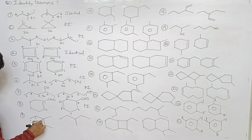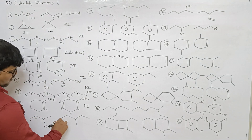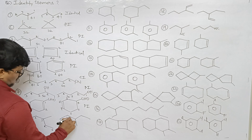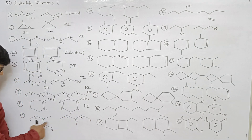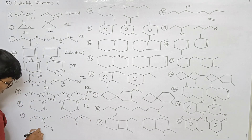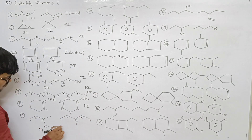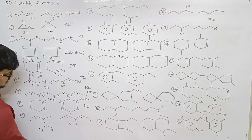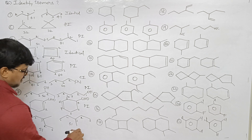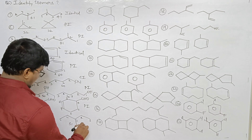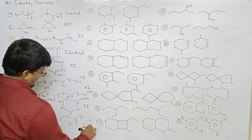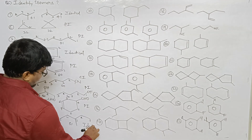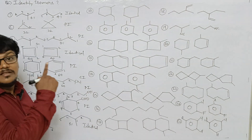Next one: first structure — one, two, three, four, five. Second structure — one, two, three, four, five. Position same, isomeric number also same. So these two are identical.